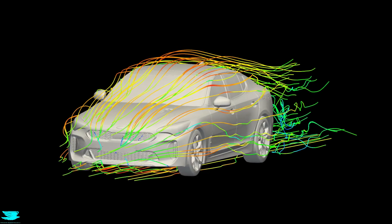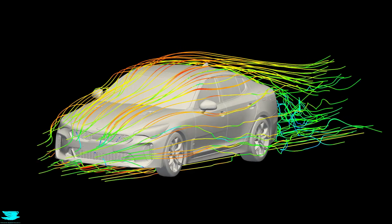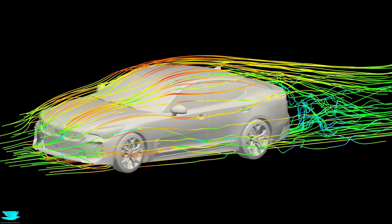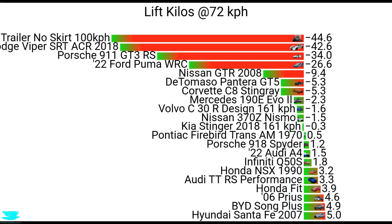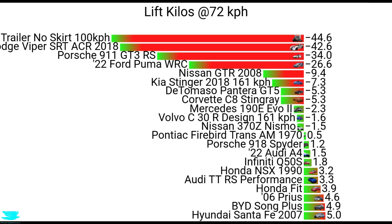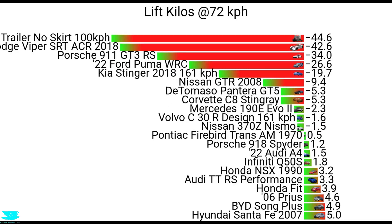The Kia Stinger has weird aerodynamics, but in a good way. Most sedans will typically produce lift, not downforce. Looking at this chart, you can see that only performance cars really produce downforce. But we simulated the Kia Stinger's aerodynamics and it produced about 20 kilos of downforce — way more than any other car in this category, including the Infiniti Q50 and even the Audi TTRS.